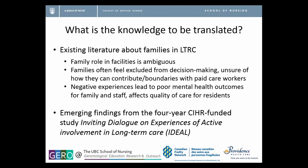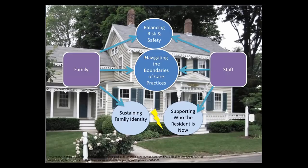We've taken the existing literature and woven it together with what we learned in our IDEAL study, which is the ongoing four-year ethnography. What we found is that this all takes place within an institutional setting, which is quite different from family caregiving in people's own homes. This is happening in a more institutional space, and we are all familiar with the constraints that can exist inside that kind of setting.